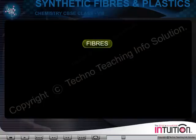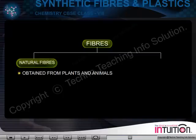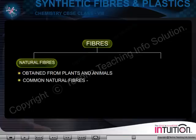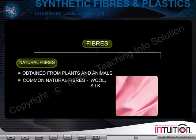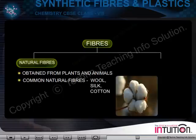Fibers are of two types. Natural fibers are obtained from plants and animals. The most common natural fibers are wool, silk, cotton, etc.